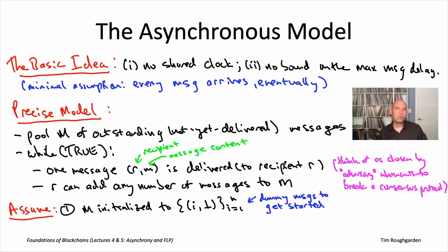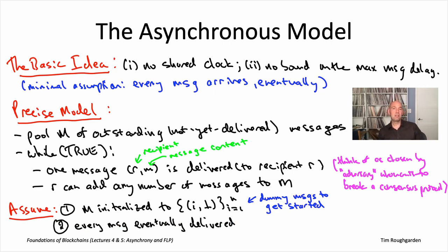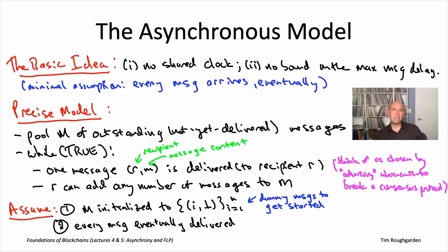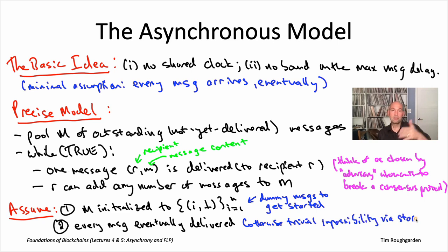We will be making the minimal assumption that every message is eventually delivered — it could be an arbitrarily large but finite amount of time. This is a minimal assumption for the model to be interesting: without it, a bunch of honest nodes could just be starved until the end of time, never hearing about anything. And there's obviously no way to maintain consistency and liveness when you literally never hear about anything.